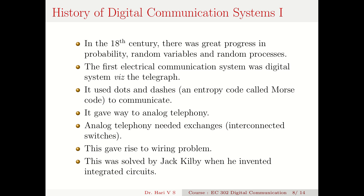If you look back into the history of digital communication systems, the first electrical communication system was actually a digital system — that was the telegraph. It used discrete messages for communication. Much of the developments in communication are possible because of developments in probability, random variables, and random processes. So the first electrical communication system was not an analog one but a digital one — a telegraph that used dots and dashes. It was actually something called an entropy code, called Morse code, to communicate.